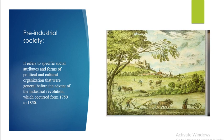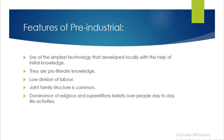Pre-industrial societies are the first societies that developed locally with the help of initial knowledge. They are pre-literate. The joint family structure is common. There is dominance of religious and superstitious beliefs over people's day-to-day life activities.